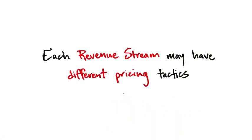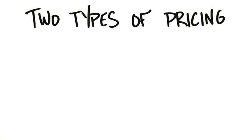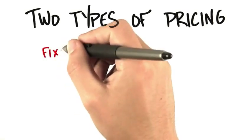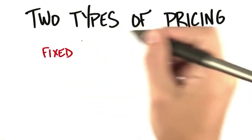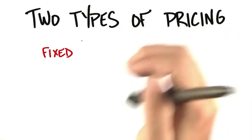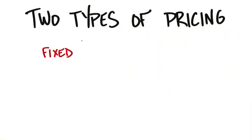Pricing is the tactics. First, you have to figure out what revenue stream you're going to use for the customer segment. There are two types of prices. One is fixed pricing — fixed pricing is just like it sounds. There's no haggling. Here's how it is; it's the fixed price.